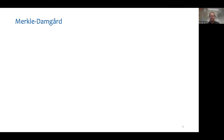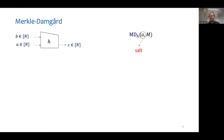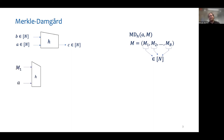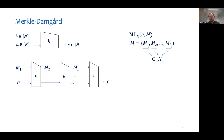Our focus for this talk is the Merkle-Damgård construction. It is based on a compression function H that takes as input two values lying in 1 through n and outputs a value in 1 through n. The hash of a message M is defined with respect to a hash key A, also known as the salt, as follows. M is padded up to an appropriate length and then broken up into blocks such that each block lies in 1 through n. The compression function is first evaluated using the salt and the first message block, then evaluated again using the first output along with the second message block, and so on. The output produced by the final evaluation is the hash of M with respect to the salt A.